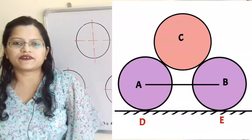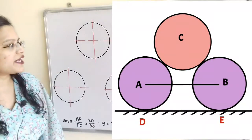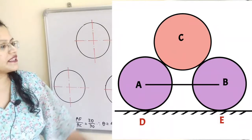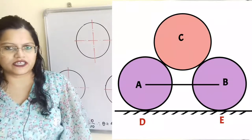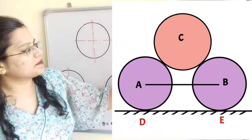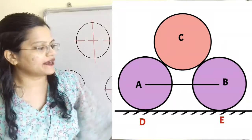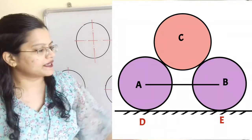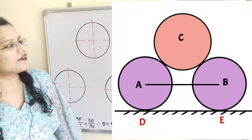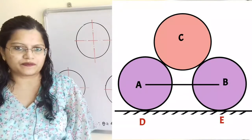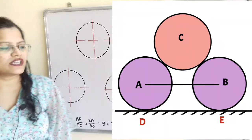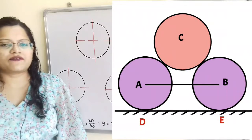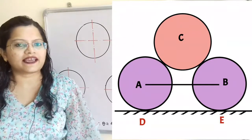Let us understand the given system. There are three cylinders A, B, C each of radius 15 cm. The distance between centers A and B is equal to 40 cm. The cylinder with center C is placed above cylinders A and B. The weight of cylinders A and B is 1000 N each, and the weight of cylinder C is 2000 N. We need to find the reaction at contact points D and E, so we first need to find the angle of inclination of the lines joining the centers.